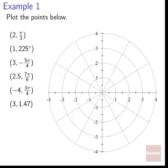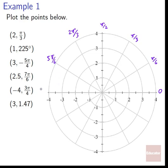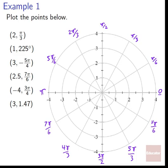Alright, we're ready for examples. Example 1: plot the points below. We've got a diagram with concentric circles and arc sectors. There are 12 pieces total, so each arc sector is 2 pi divided by 12, which is pi over 6. So the angles are: 0, pi over 6, pi over 3, pi over 2, 2 pi over 3, 5 pi over 6, pi, 7 pi over 6, 4 pi over 3, 3 pi over 2, 5 pi over 3, 11 pi over 6, and back to 0.